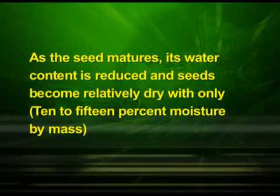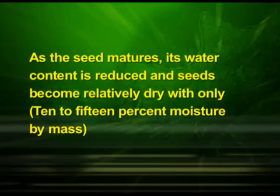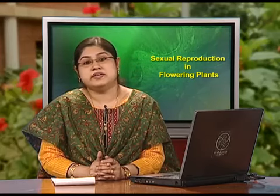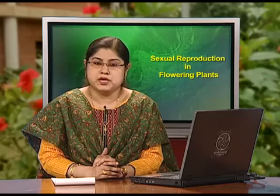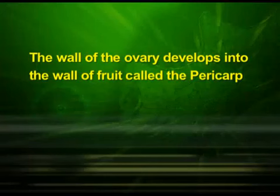As the seed matures, its water content is reduced and seeds become relatively dry with only 10 to 15 percent moisture by mass. The general metabolic activity of the embryo slows down and the embryo may enter a state of inactivity called dormancy. If favorable conditions are available — adequate moisture, oxygen and suitable temperature — they germinate. As ovules mature into seeds, the ovary develops into a fruit, and the wall of the ovary develops into the wall of the fruit, called the pericarp.